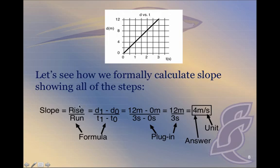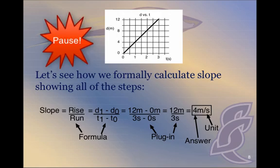Remember, slope is rise over run, but specifically what's rising is distance. So delta d is d1 minus d0, which is 12 minus 0, and delta t is t1 minus t0, which is 3 minus 0 seconds. Our delta d over delta t is 12 meters over 3 seconds, giving four meters per second. This is our formal way to calculate the slope of a distance versus time plot. Pause the video, copy it down, and come back when you're done.